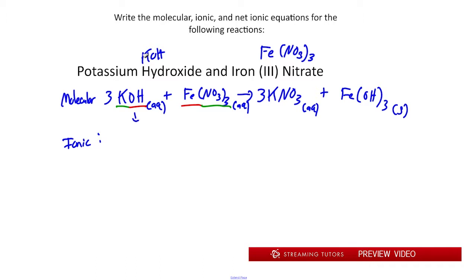Now we can do our ionic equation. First we'll split KOH into 3K+ plus 3OH-. Remember that OH- is a polyatomic ion. From Fe(NO3)3, we get Fe+3 plus 3NO3-. That's everything on our reactants. Then in our products, we have 3K+ plus 3NO3- from KNO3. And finally, iron hydroxide is insoluble, so we'll keep that as a solid.